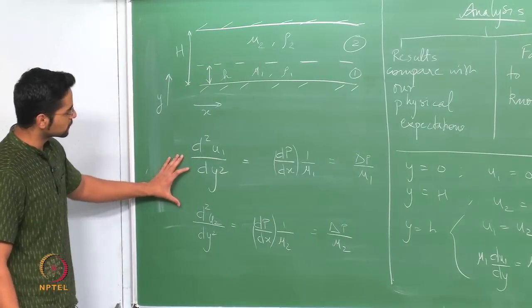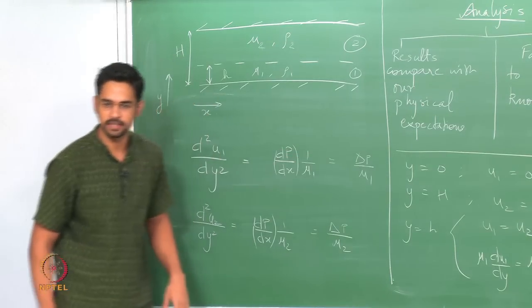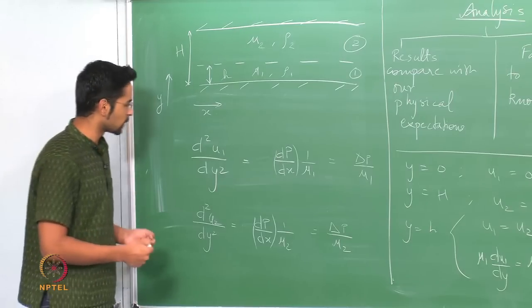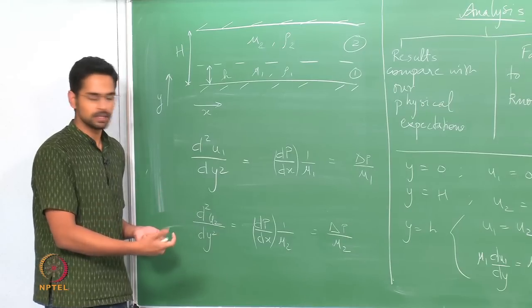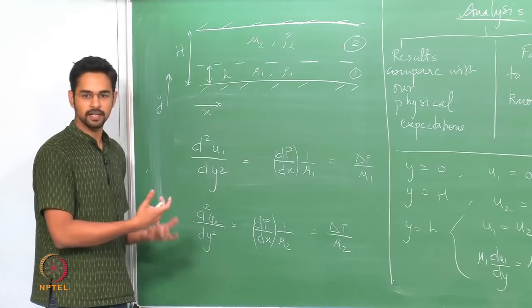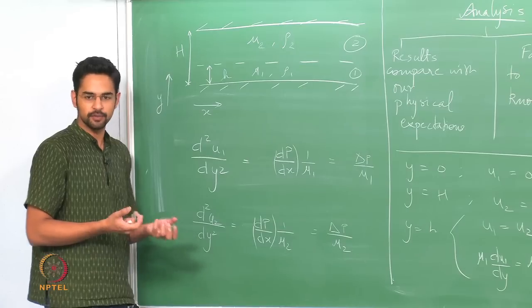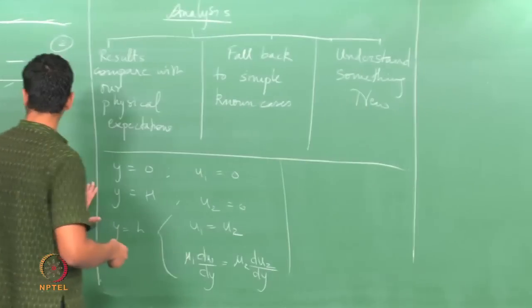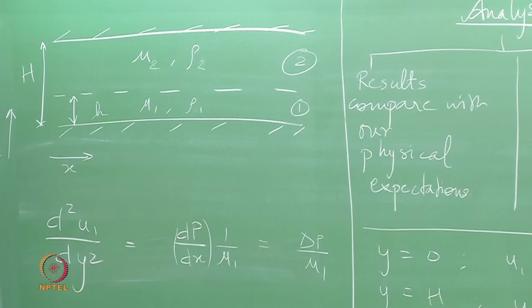The first thing to do when we have an equation of this form — a second derivative equal to a constant — is to understand what the equation is actually telling us. We know a method of solution, but very often the form of the equation can be considerably more complicated. So it helps to understand what each term is saying and what would happen if you increase one term or drop another. Since we have two coupled equations, we will start with the simpler single-phase case to illustrate what I mean.